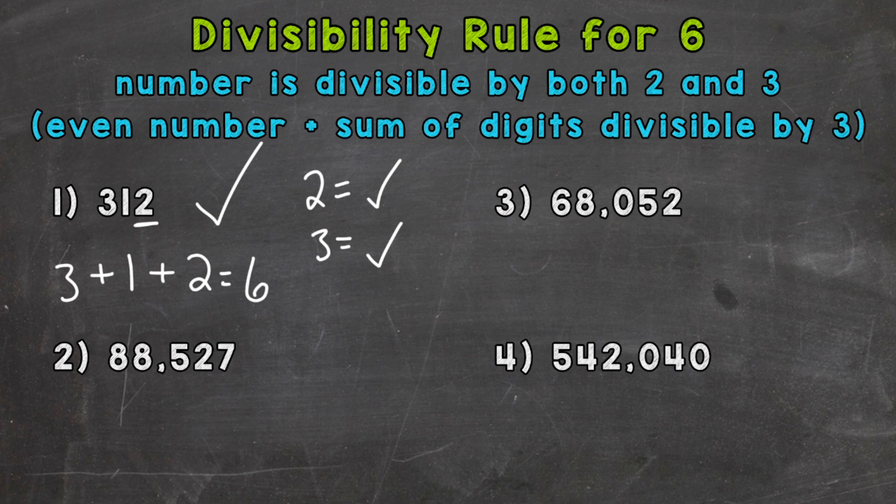On to number 2. So let's see if this is divisible by 2. This number ends in a 7. 88,527 ends in a 7. So it's an odd number, therefore not divisible by 2. Since it's not divisible by 2, we automatically know that this isn't divisible by 6. Because remember, it needs to be divisible by both 2 and 3. So there's no sense in trying 3 there because we know that it's not divisible by 6 based on it being not an even number.